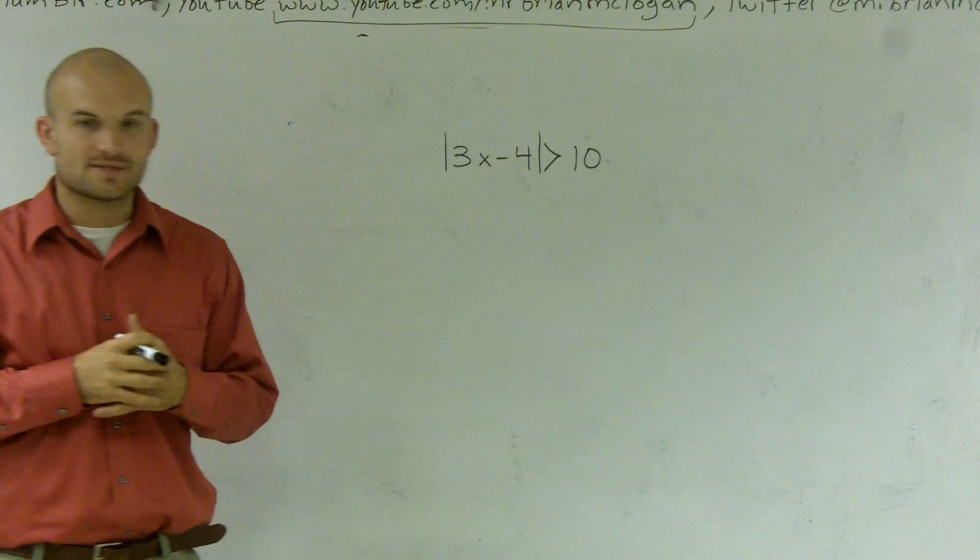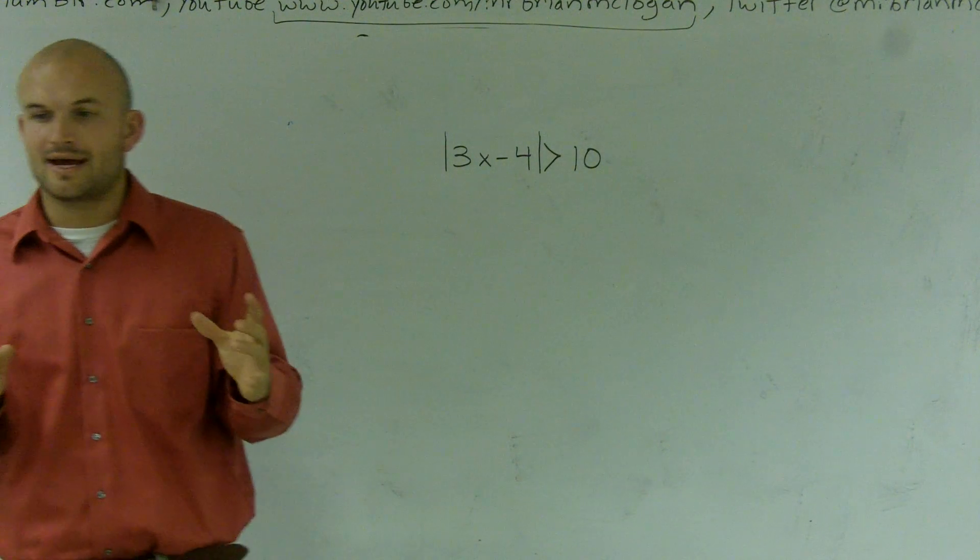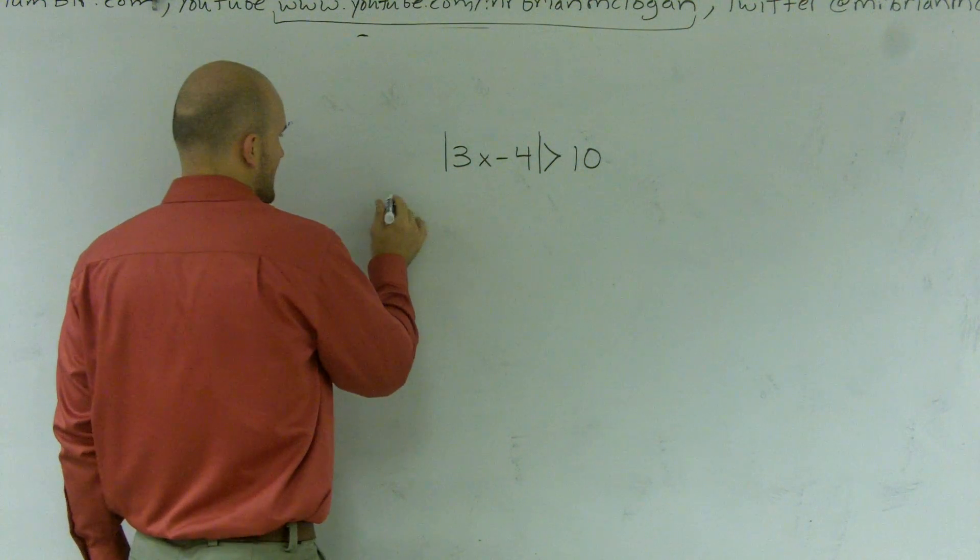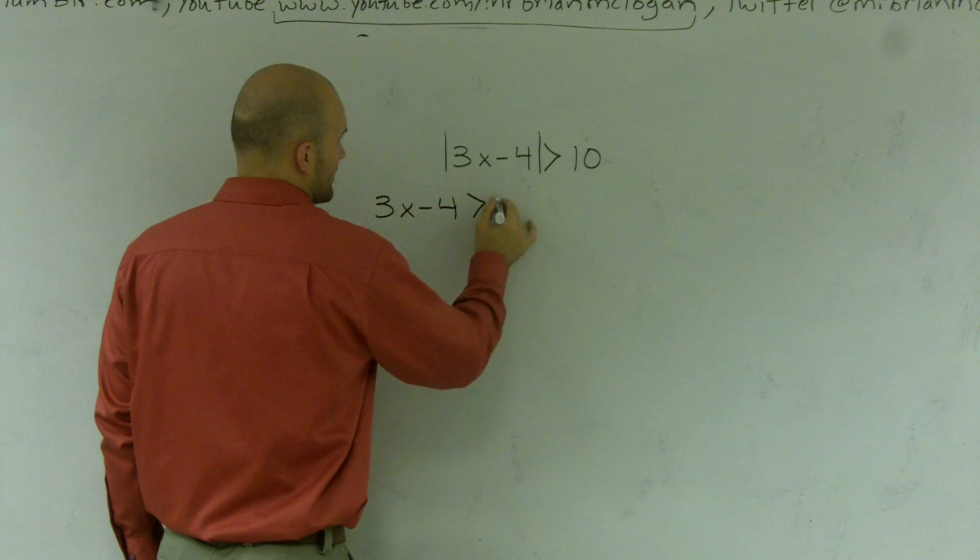So to do this, the first thing we want to do is remember we have an absolute value. We can write that as two different solutions, where we have 3x minus 4 is greater than 10.